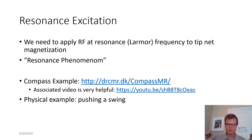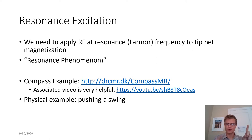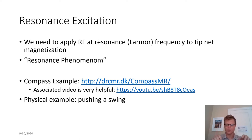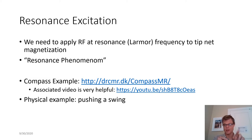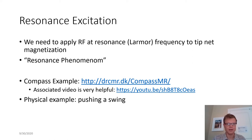In the swing example, equilibrium is the lowest energy state — the swing hanging down. In MRI, it's the net magnetization pointing along the z-axis. The resonance is that in the swing example you pump your legs back and forth at the right frequency, swinging higher and higher. In MRI, we apply our perpendicular RF field at the right frequency, and it gradually tips the net magnetization further and further away from the z-axis, as seen in that animation. Without this resonance condition, we cannot get excitation of our net magnetization — we cannot get signal.